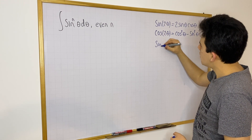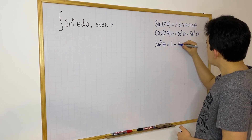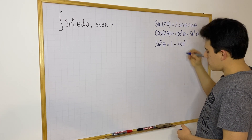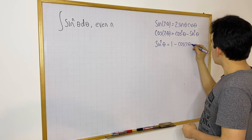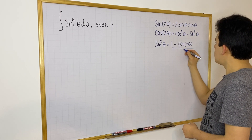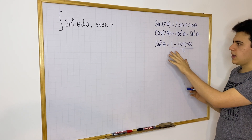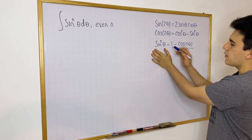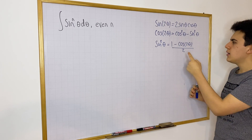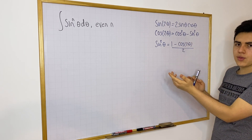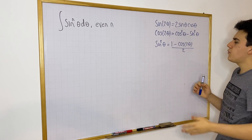If you have sine squared θ, this happens to be equal to 1 minus cosine of 2θ, divided by 2. This is extremely important, because notice that on the left side you have sine squared, and on the right side you have linear terms — cosine is not squared or anything. So it's easier to deal with cosine than to deal with sine squared.